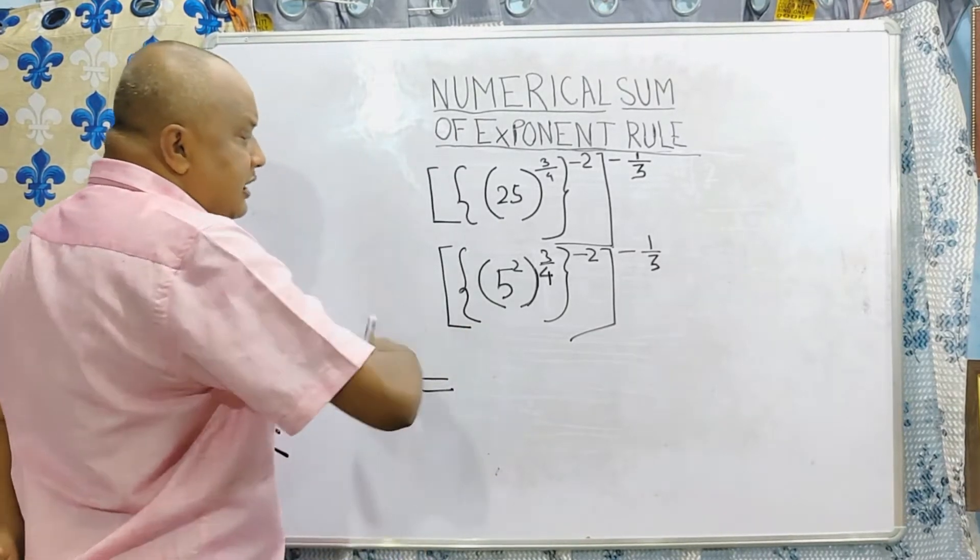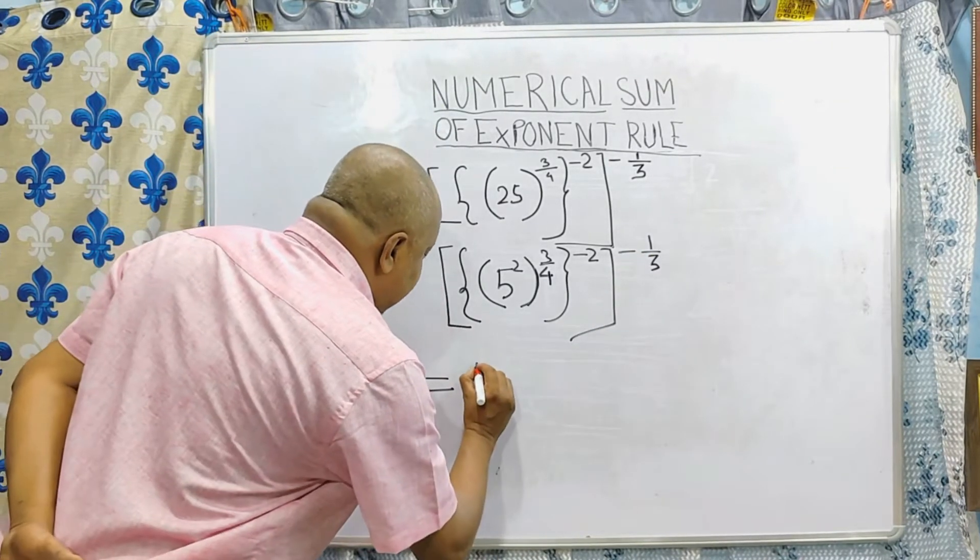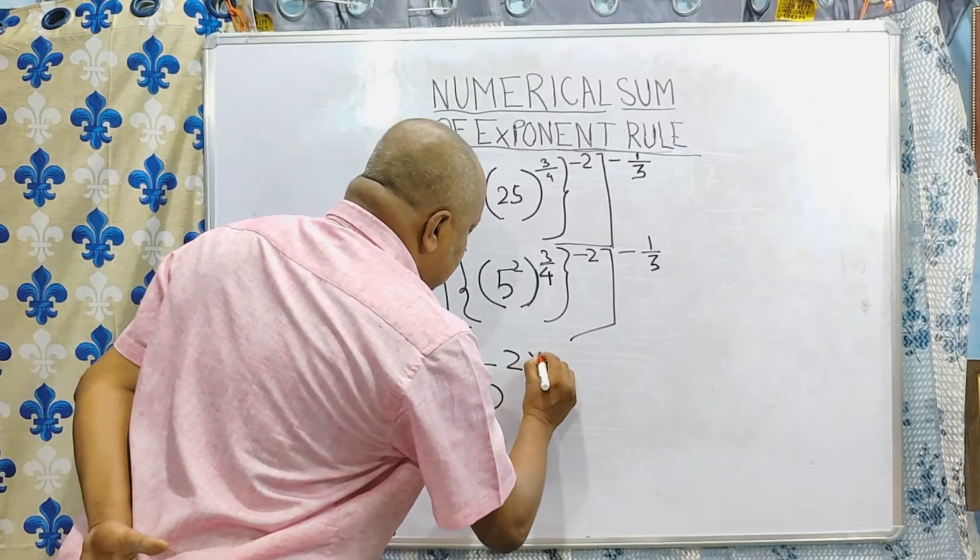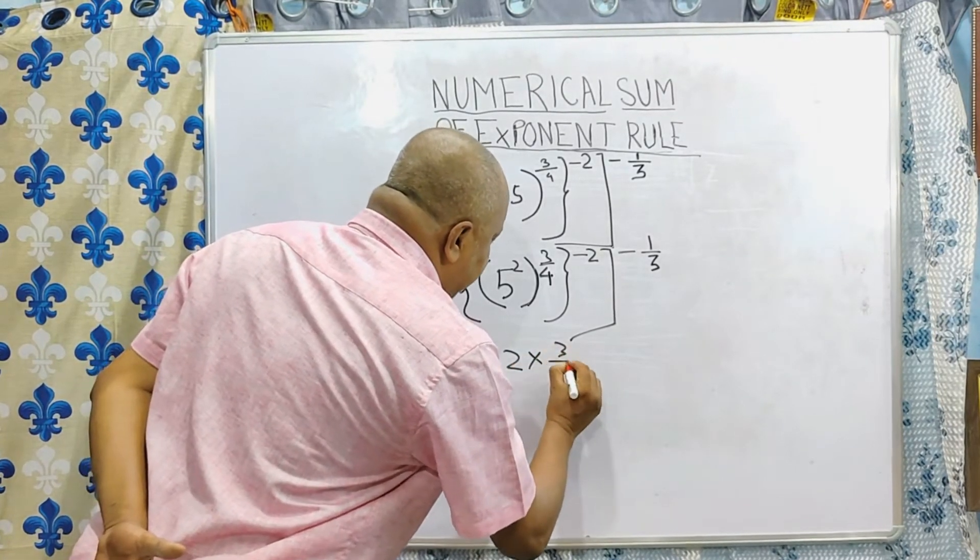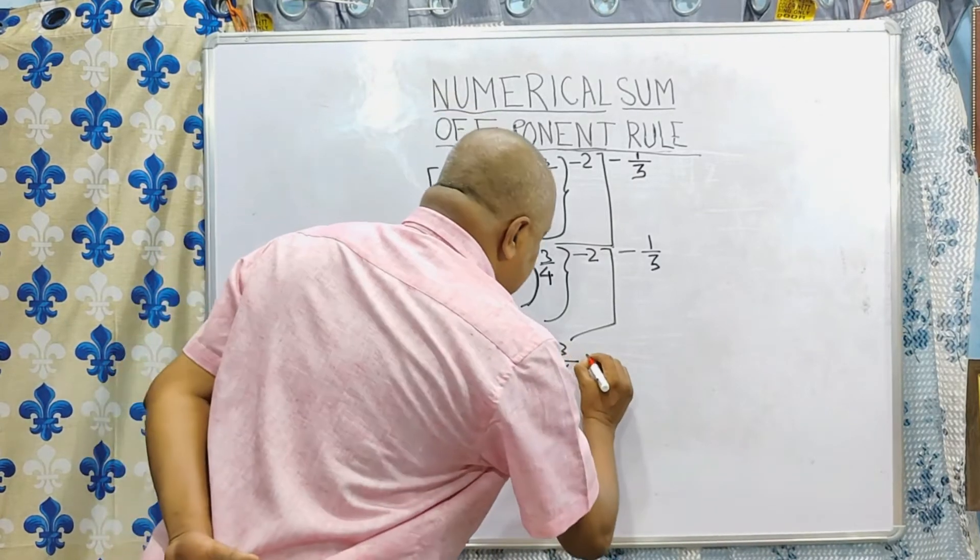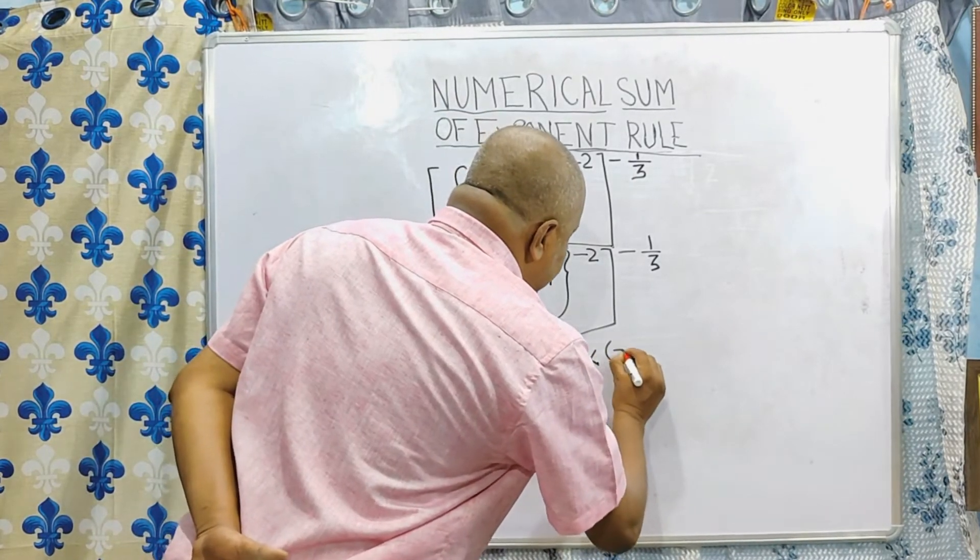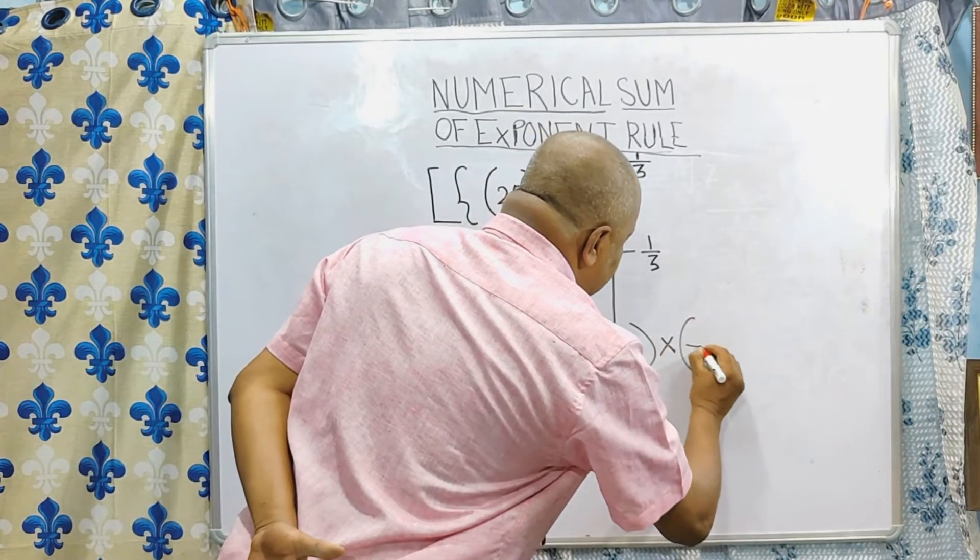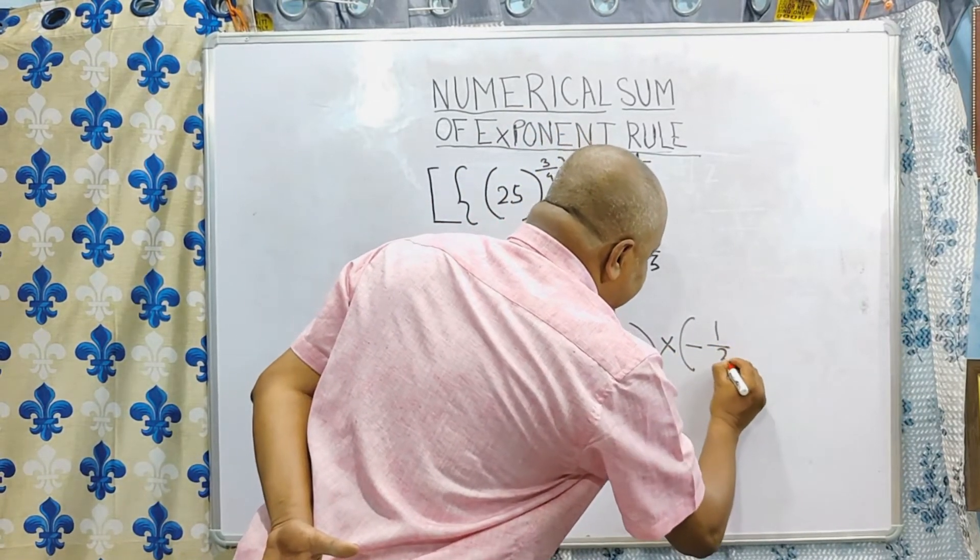This will result in one step. It can be done. This is 5 to the power 2 into 3 by 4 into minus 2 into minus 1 by 3.